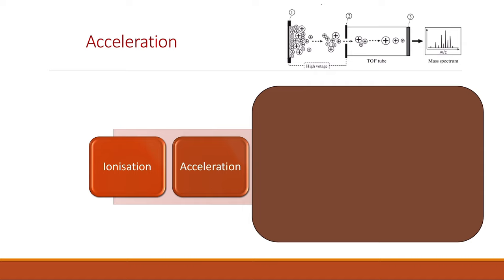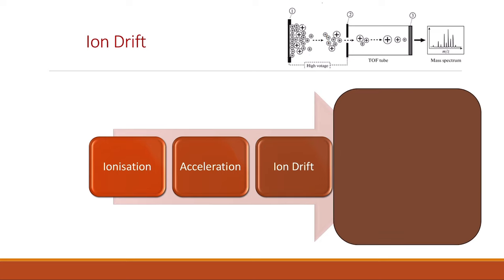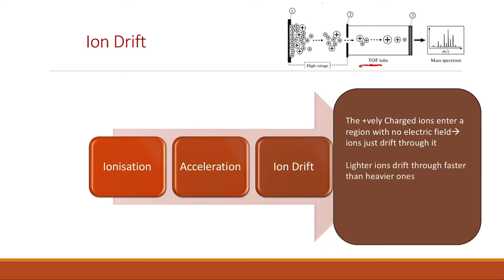The second stage is acceleration. The positively charged ions are accelerated by an electric field, and all the charged particles will have the same kinetic energy, so the lighter ones will move faster than the heavier ones. The third stage is ion drift. The positively charged ions enter a region with no electric field — the time-of-flight tube — and just drift through it. Lighter ions drift through faster than heavier ones, reaching the detector sooner, and they move at different speeds.